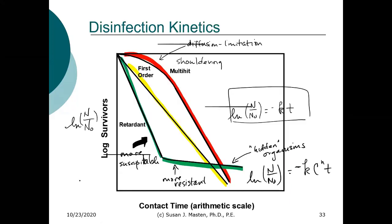A question was asked about whether the retardant curve could result from adaptation. On a short time scale, not likely, but on a longer scale, yes. We see this with antibiotic-resistant organisms. There is some concern about whether we are producing organisms that are more resistant to disinfection, and how that plays out in terms of treatment.